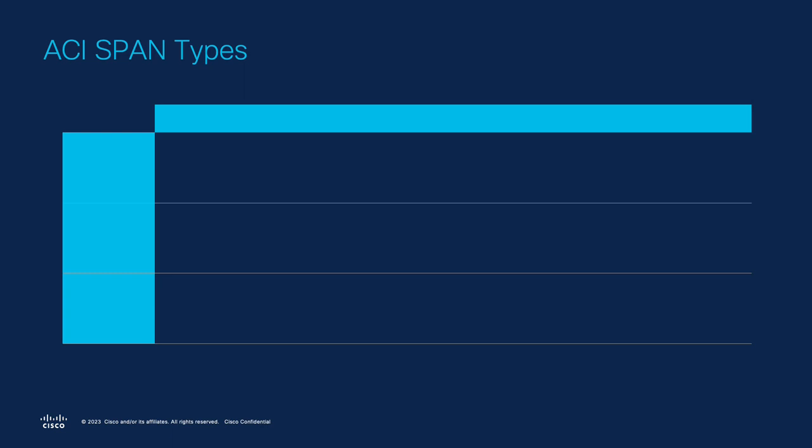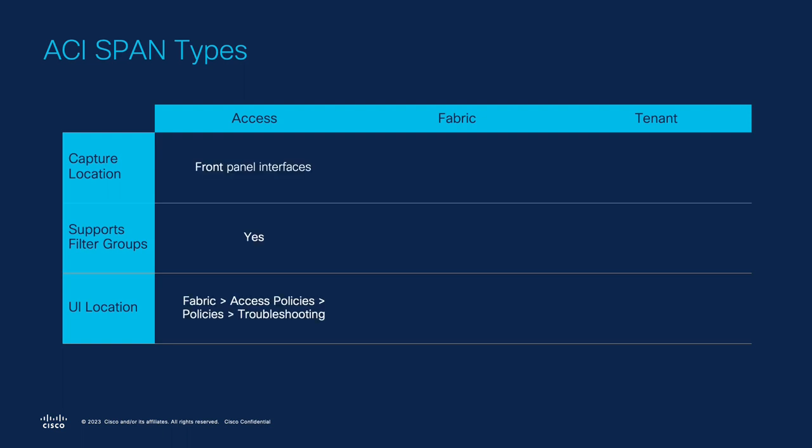As mentioned previously, there are three configurations for SPAN within ACI: access, fabric, and tenant. Access SPAN is used to capture packets that come in and go out of the interfaces between the leaf switch and your external devices. You could use these SPAN sessions to verify if traffic is ingressing and egressing the ACI fabric to and from your external device. Filter groups can be used with access SPANs — these are ACL-based filters that specify what type of traffic you want the SPAN to capture. Access SPAN is configured under Fabric > Access Policies > Policies > Troubleshooting.